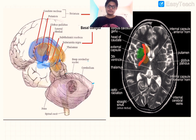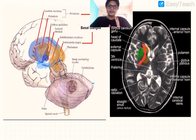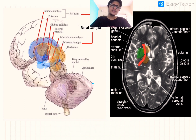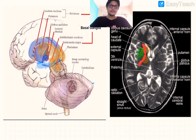The basal ganglia has four circuits or loops: the motor loop, the cognitive loop, the limbic loop, and the oculomotor loop. The oculomotor loop concerns the prefrontal cortex and the limbic loop involves the limbic system, but the motor loop is the one implicated in the pathogenesis of Parkinson's disease.